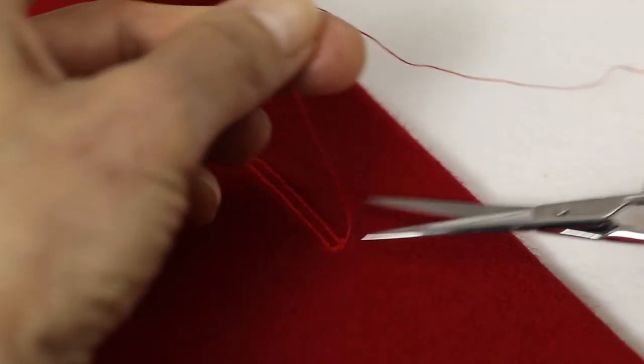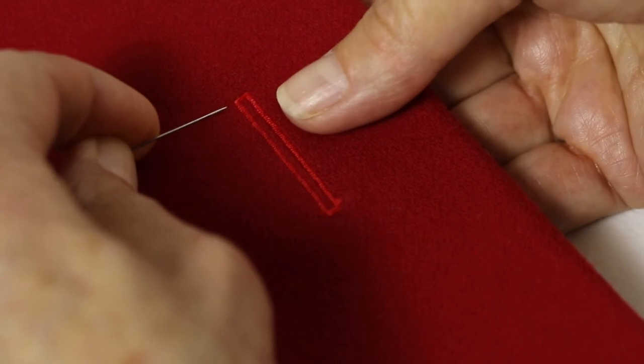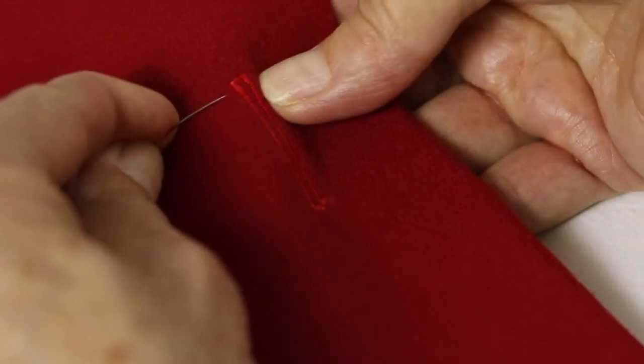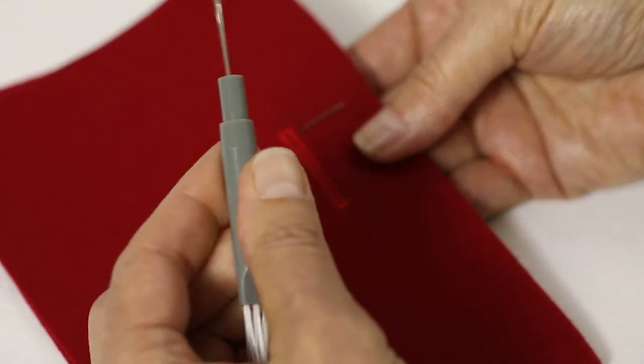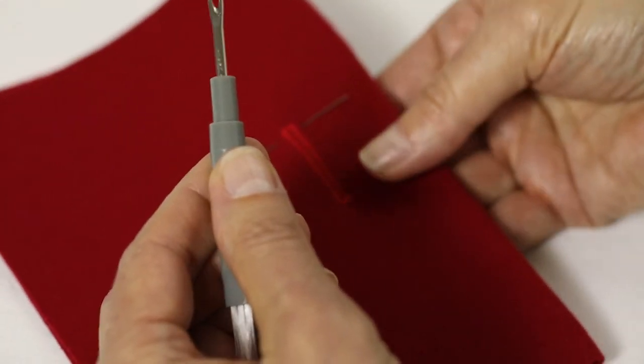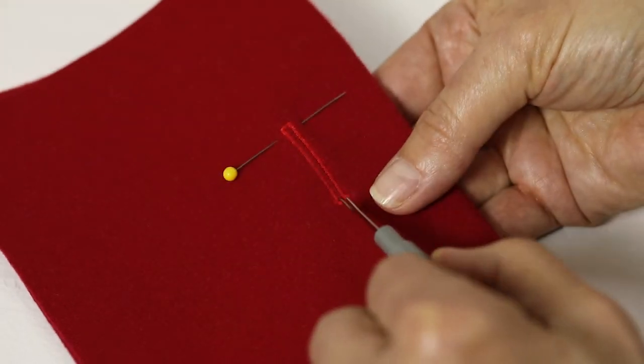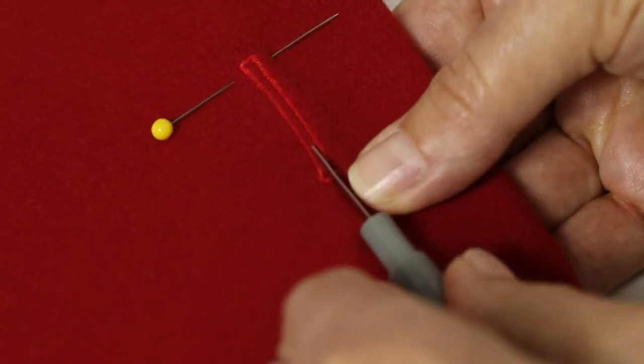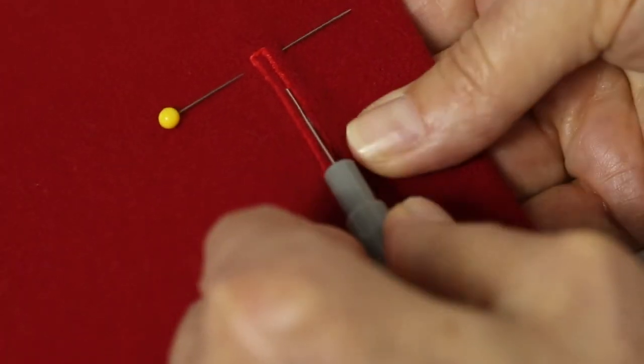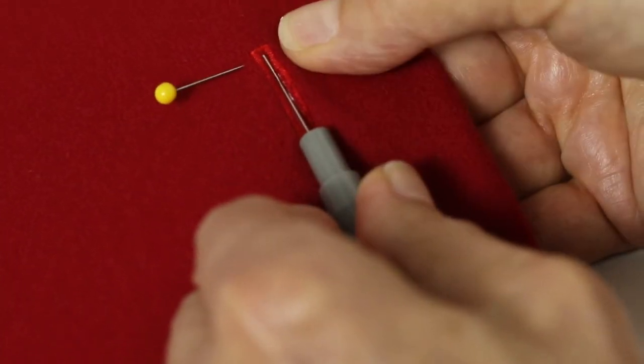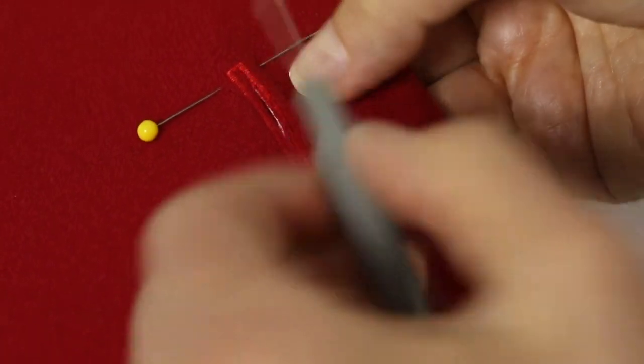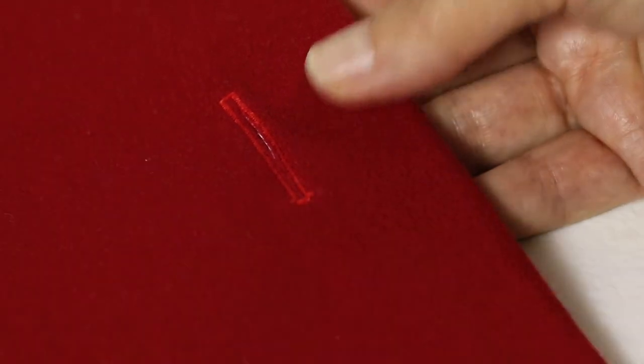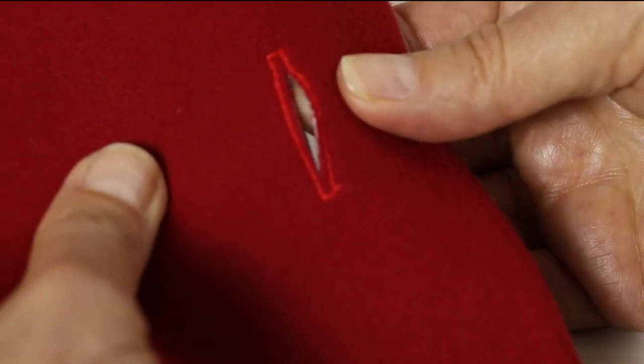Trim your thread tails, then place a pin at the end of your buttonhole and use your seam ripper, which is located in your removable storage compartment, to cut open the buttonhole. Place it in the end of the buttonhole and push across carefully, making sure you don't cut through the bar tack stitches. The pin will help stop your seam ripper from cutting through. Take the pin out, and you have a beautiful buttonhole.